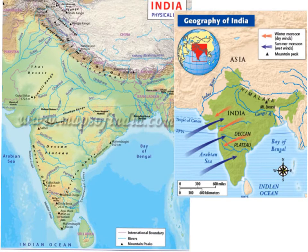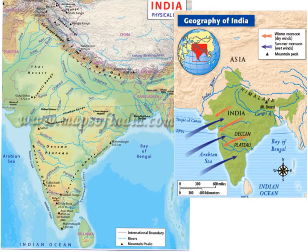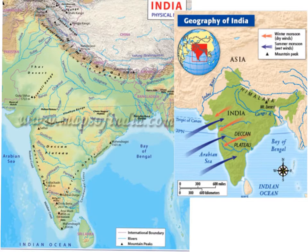To help you become acquainted with India's geography and the climate, we are going to do a few activities. First, study the map. Describe the location of the mountains and the oceans. What effect do you think these features had on the movement of people to and from India? Pause the video for a few seconds and think about those questions and answer them in a discussion format.